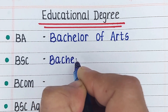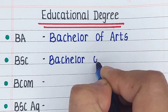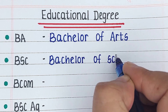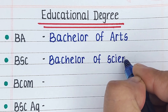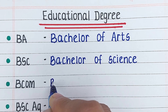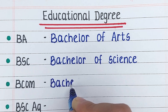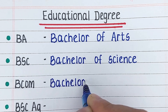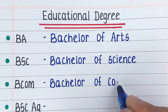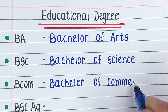First one is BA. BA stands for Bachelor of Arts. Next is BSC. BSC stands for Bachelor of Science. Next is BCOM. BCOM stands for Bachelor of Commerce.